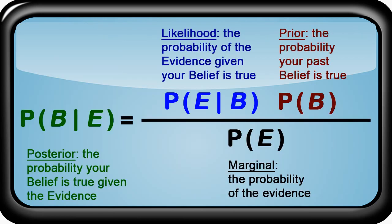Bayes' Theorem is a mathematical equation used in statistics which describes the probability relationship between your prior beliefs and new evidence you experience. It allows you to calculate the probability of the unknown given the known. Bayes' Theorem can work forwards and backwards — it allows you to calculate predictions on something that has yet to happen, or you can calculate the probability that something happened in the past based on present evidence.